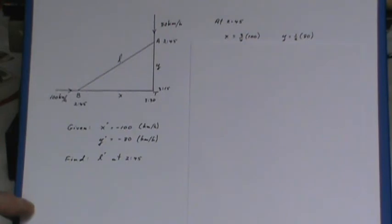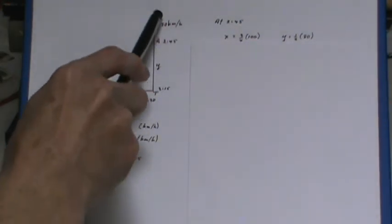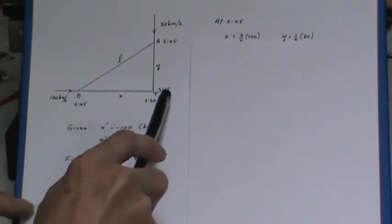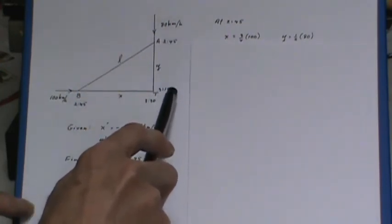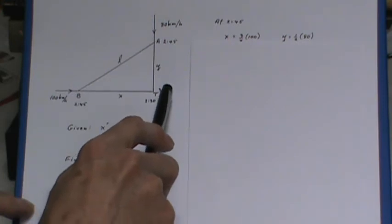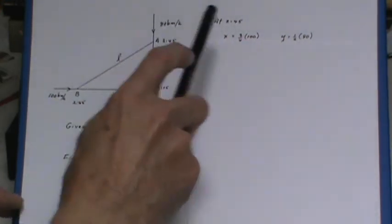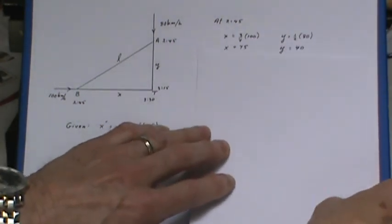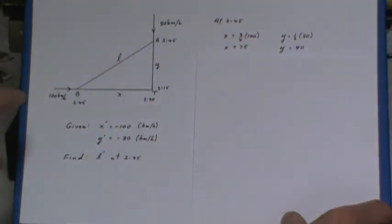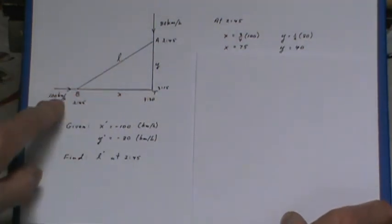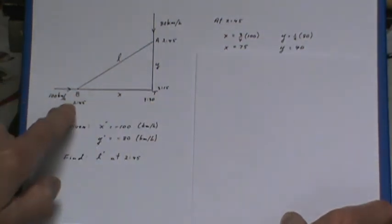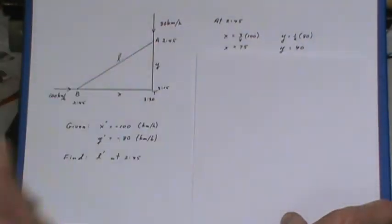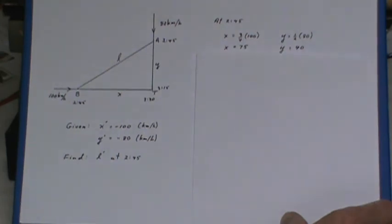So at 2:45, since the arrival time here is 3:15, that's a half an hour later. So since that train is moving 80 kilometers per hour, the y value will be half of 80 or 40. And this train coming in is going to arrive at 3:30, so that's 45 minutes. So that's three quarters of its 100 kilometers per hour, so it's 75.